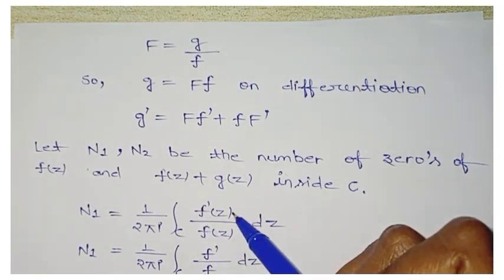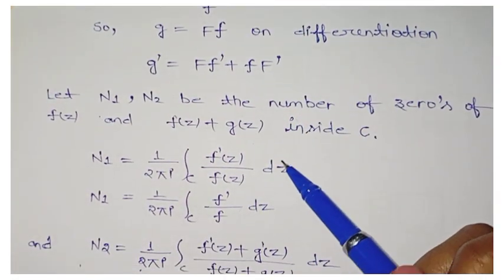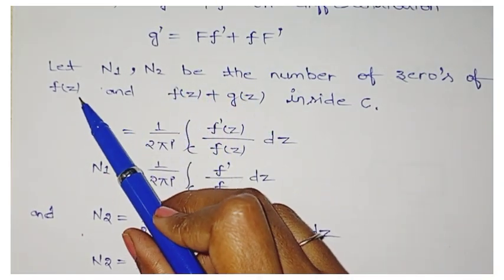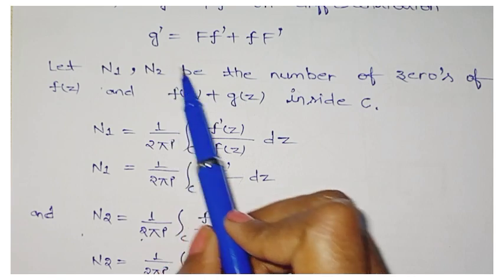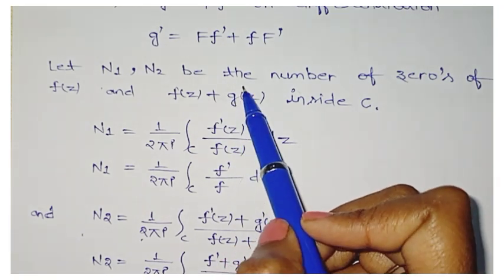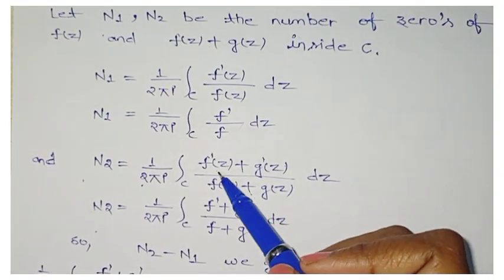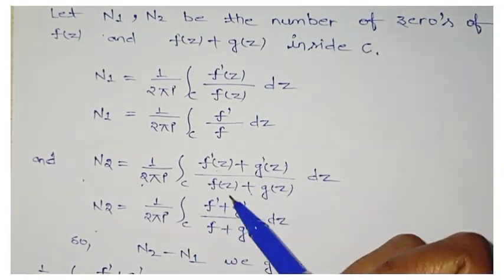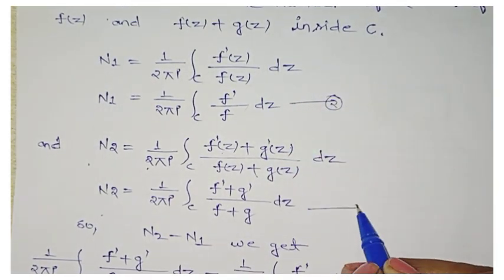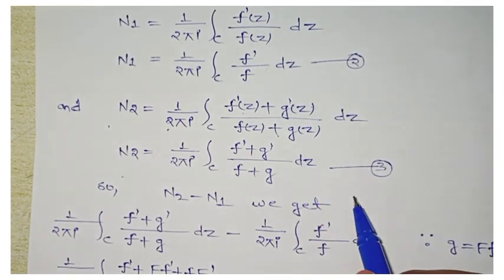Using Cauchy's integral formula, we can write: n1 = (1/2πi) ∮ f'(z)/f(z) dz — this is equation number two. Similarly for n2, its function is f(z) + g(z), so n2 = (1/2πi) ∮ [d/dz(f+g)]/(f+g) dz — this is equation number three. Now on subtracting equation two from equation three: